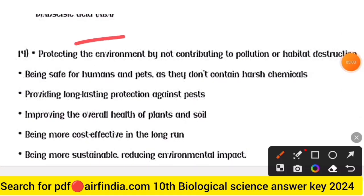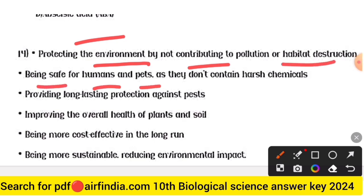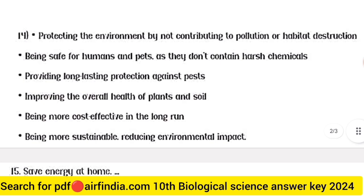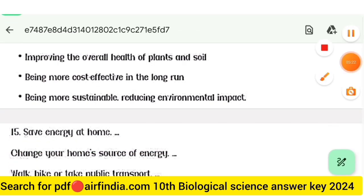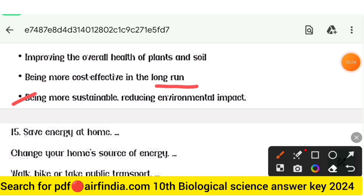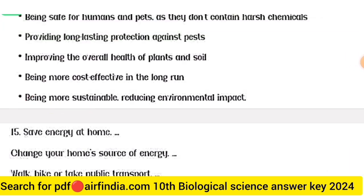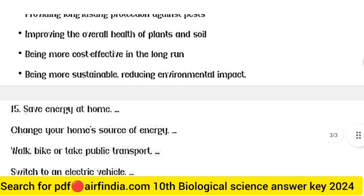Question fourteen answer: protecting the environment by not contributing to pollution or habitat destruction; being safe for humans and pets as they don't contain harsh chemicals; providing long-lasting protection against pests; improving the overall health of plants and soil; being more cost-effective in the long run; and being more sustainable by reducing environmental impact.